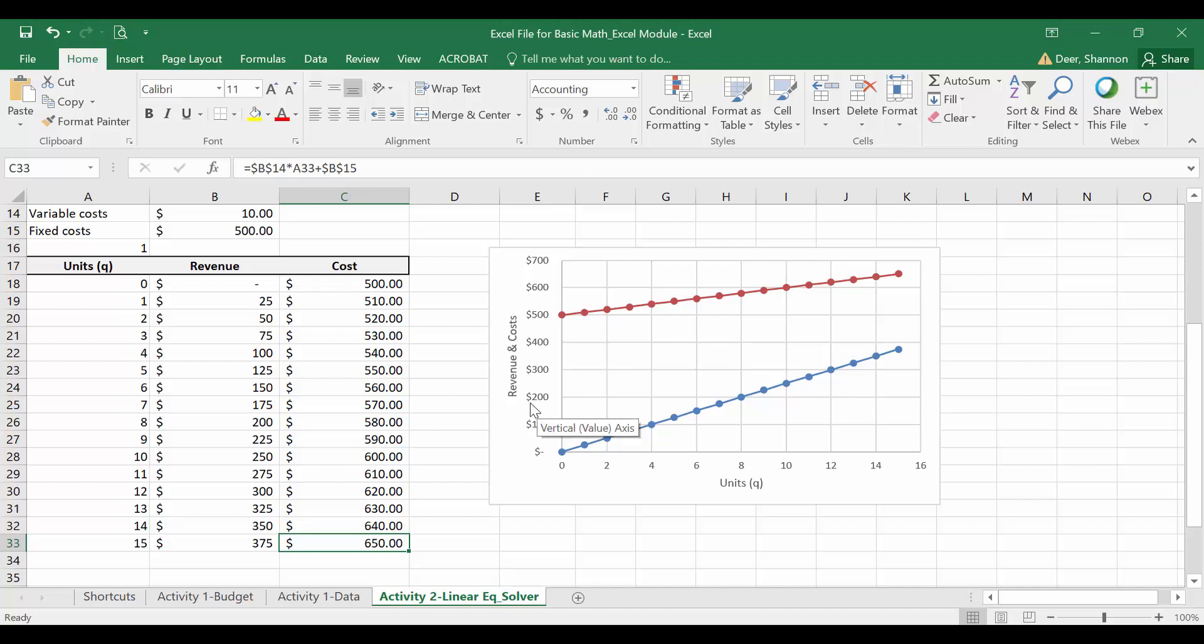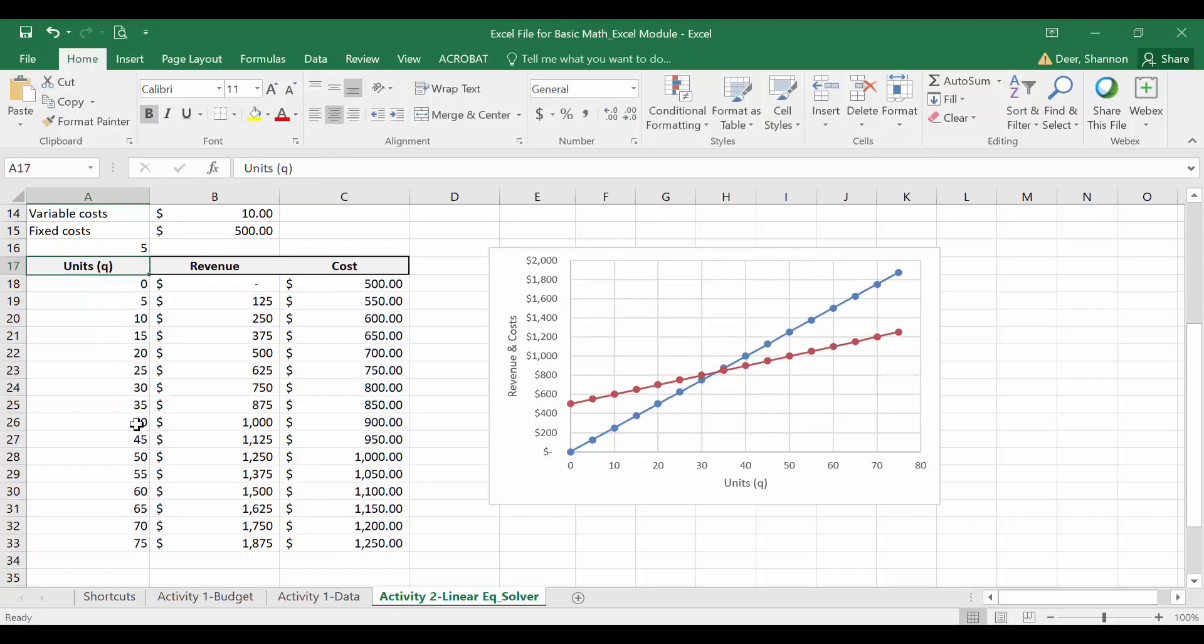Let's change our table so that instead of increasing by one unit each time, we increase by five units. We've looked at that before and we noted that our table updated as did our chart over here.